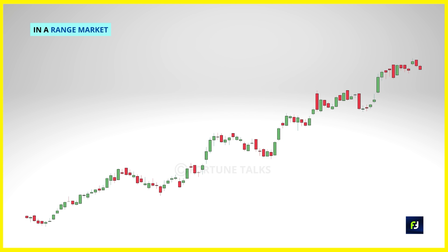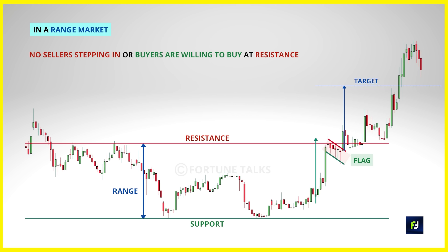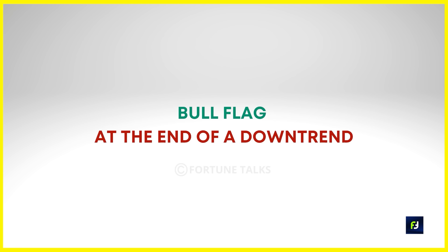Bull flags can also form when the market is in a range near a resistance level — a concept called breakout with buildup near resistance. A buildup near resistance happens because there are no sellers stepping in or buyers are willing to buy at higher prices — a sign of strength. To identify such an opportunity: find a market in a range, then wait for a flag pattern to form near the resistance level as a buildup. You can trade the break above the buildup or wait for the market to close above the resistance level. Entry, stop loss, and target criteria remain the same.